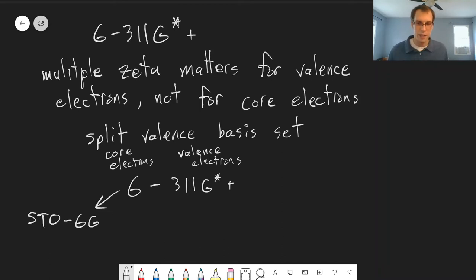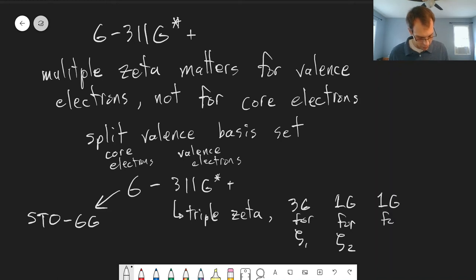And then the valence electrons, if we have three numbers here, that means this is a triple zeta basis set. There are three different zeta values that we're using for our Slater-type orbitals. And that means we have three Gaussian functions for our first zeta value, one Gaussian function to represent our Slater-type orbital for the second zeta value, and one Gaussian function for the third zeta value.